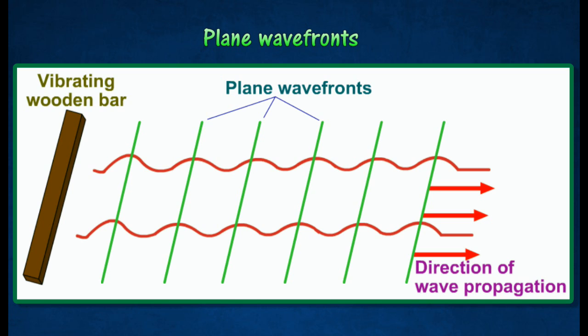There are straight lines along the particular crest of the waves. The wavefronts are perpendicular to the direction of propagation. Wavelength, lambda, is the distance between two successive crests or two successive wavefronts.